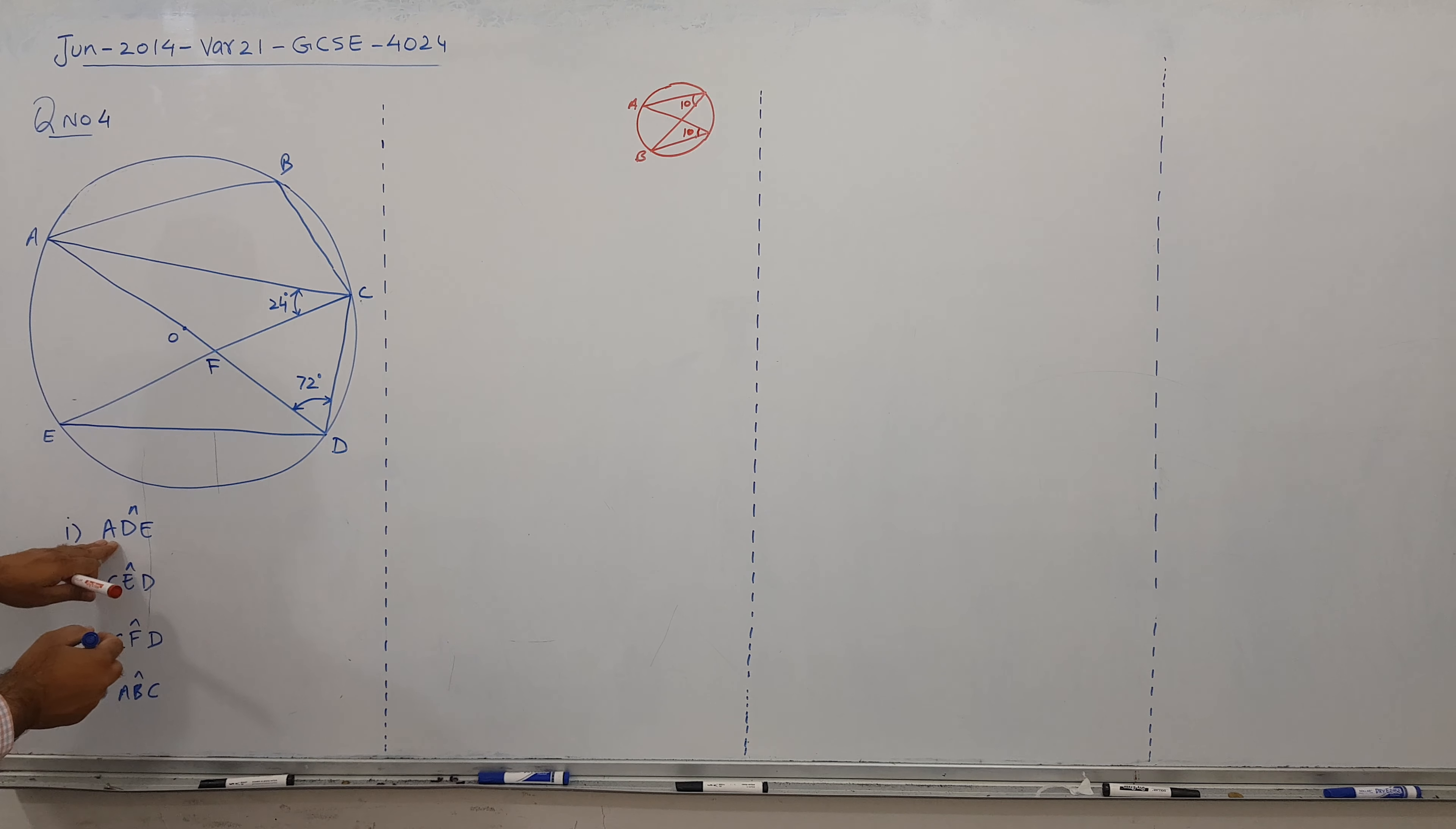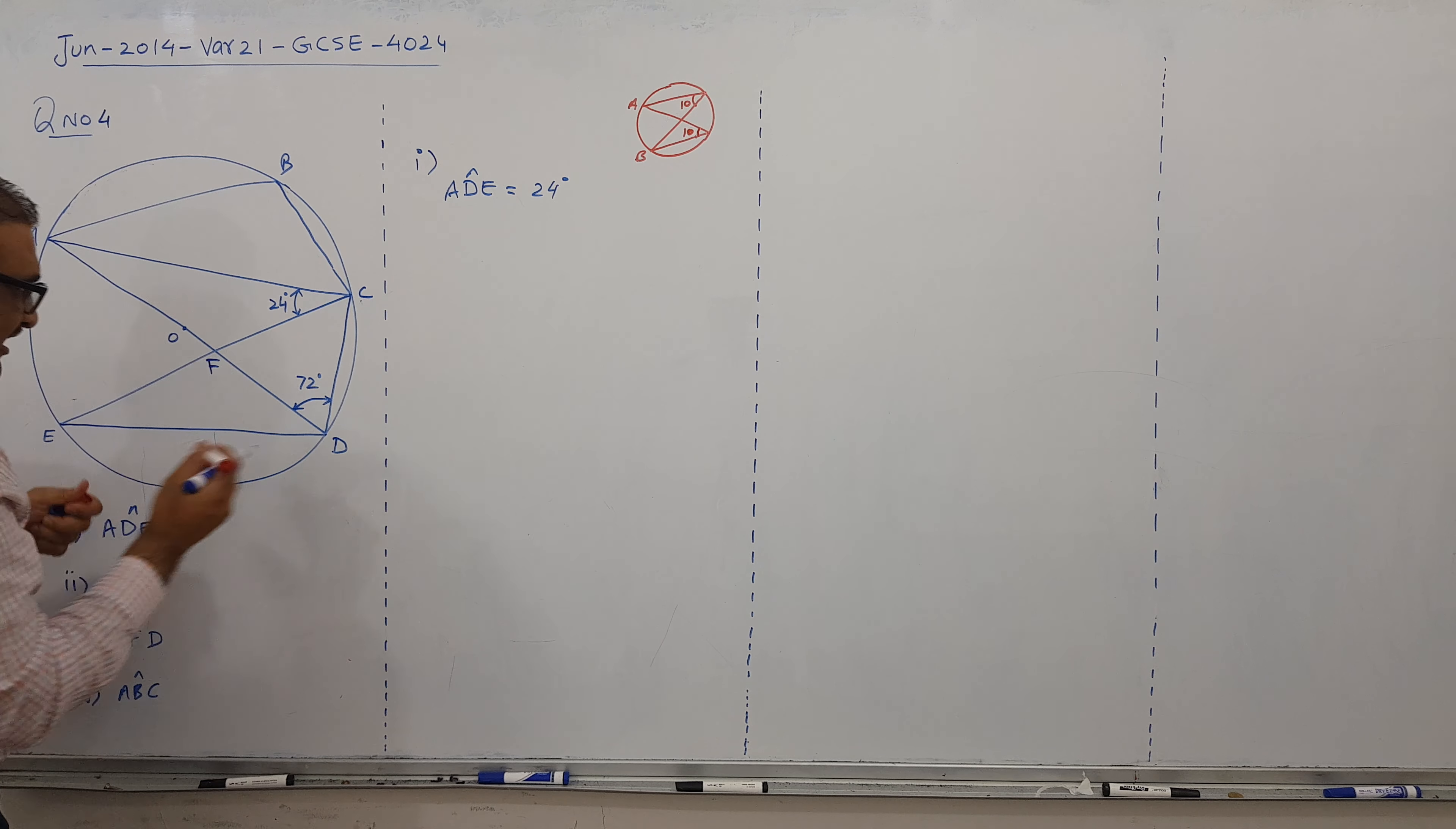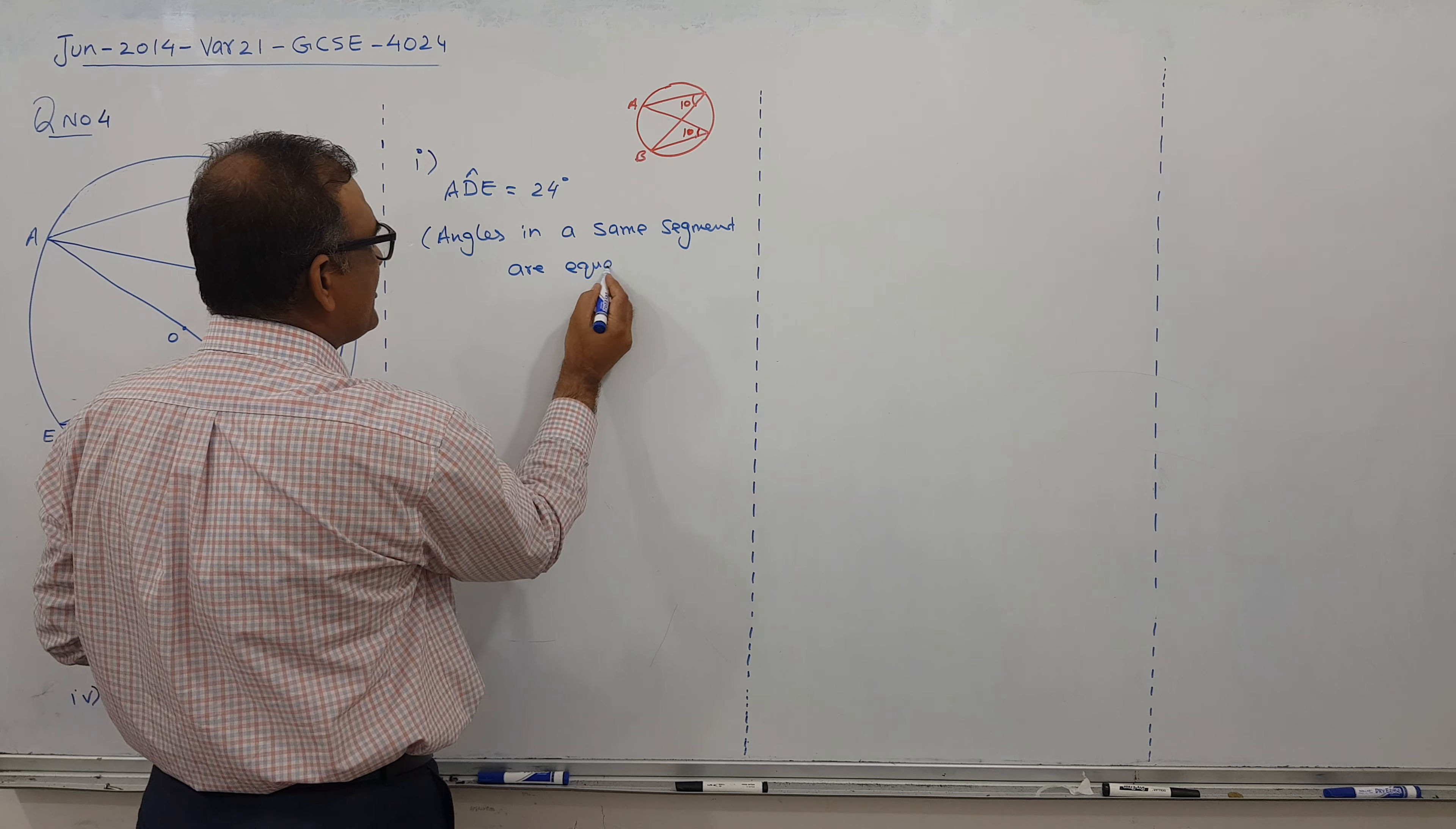So angle ADE is equal to 24 degrees. The reason is very clear: starting from here, meeting here on the circle edge, and starting from here, meeting here. The reason is angles in the same segment are equal.